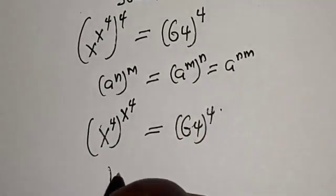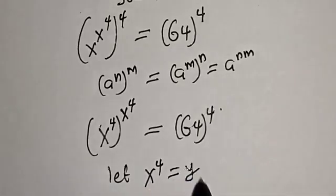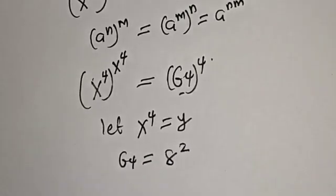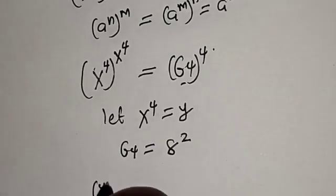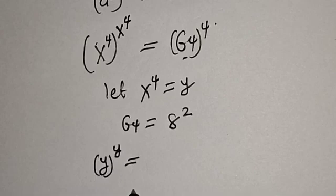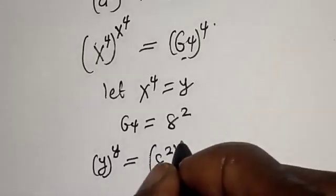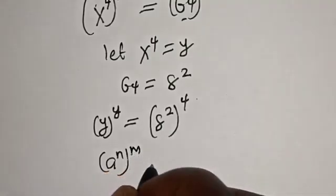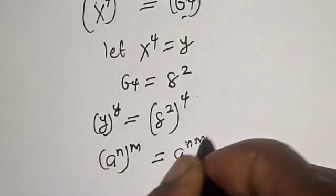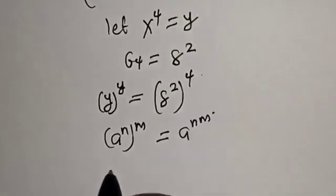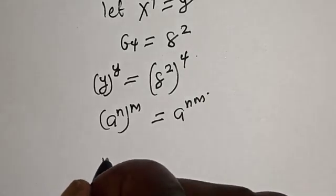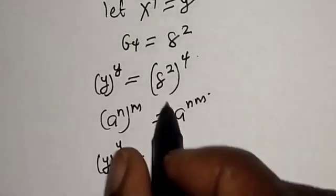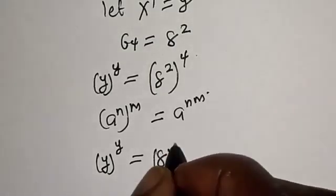Now from here, let s raised to power 4 equal y, and 64 equals 8 squared. So this becomes y raised to power y is equal to 8 squared raised to power 4. Remember the rule that a raised to power n raised to power m is equal to a raised to power n·m. Then this becomes y raised to power y is equal to 8 raised to power 2 times 4, that is 8 raised to power 8.